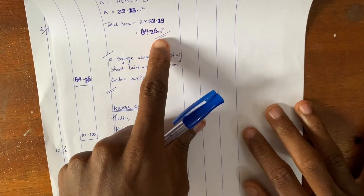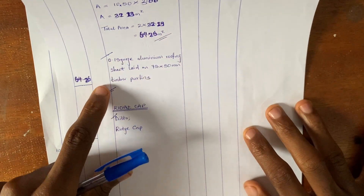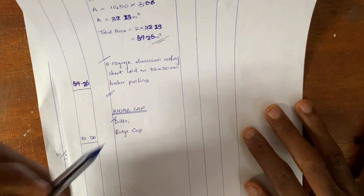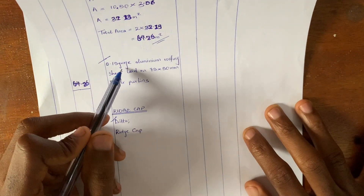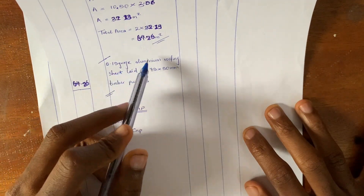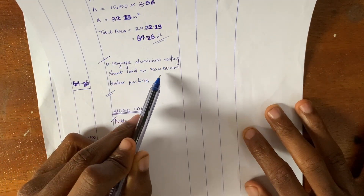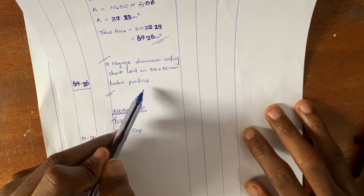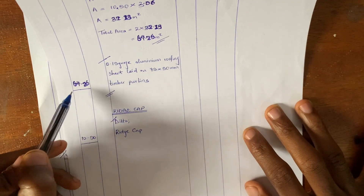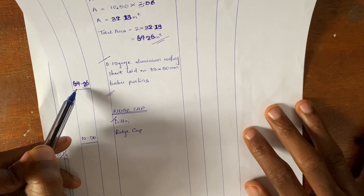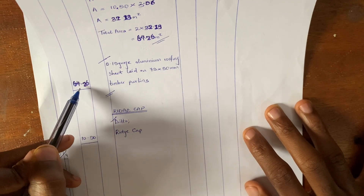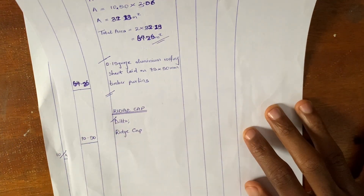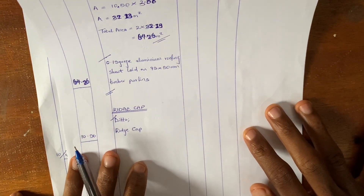After calculating your area, all you need to do now is describe: 0.15 gauge aluminum roofing sheets laid on 75 by 50mm timber purlins. The area is 64.26 square meters, and then you close.